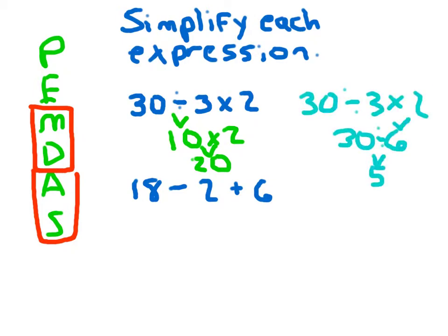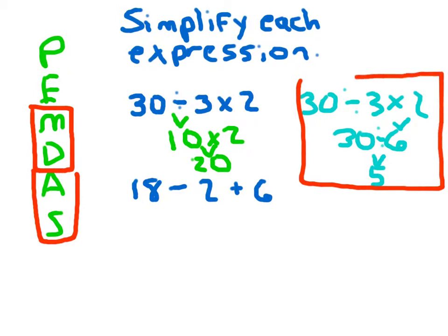If someone had done that problem incorrectly, they would have evaluated 3 times 2 first and come up with the wrong answer of 5. Our correct value is 20 for that expression.